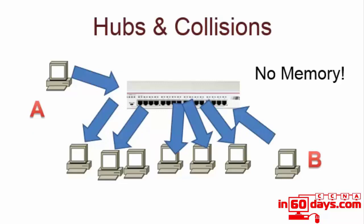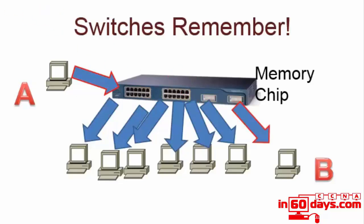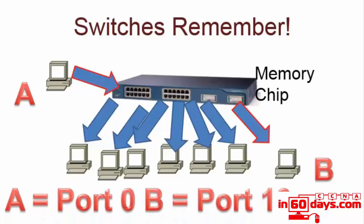In the early days of networking it wasn't a problem, but now with voice traffic, video conferencing, and very large files, it simply wouldn't work. Layer two switches have a memory chip on board. When host A sends a frame destined for host B, a switch that has just booted doesn't know which device is connected where. But as devices send frames, the switch remembers which interface each MAC address is connected to. So host A on port 0 and host B on port 10 — the other devices won't receive a copy of that frame.